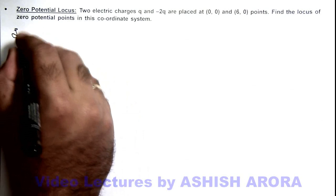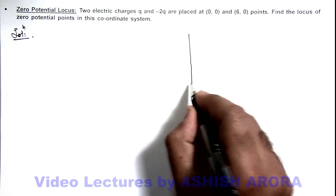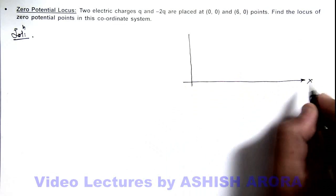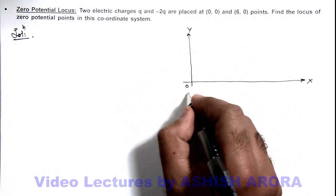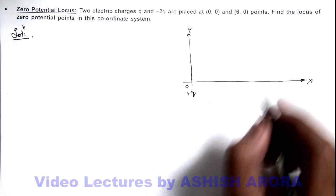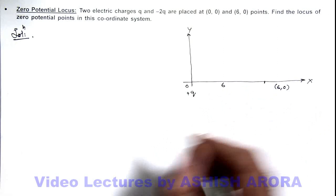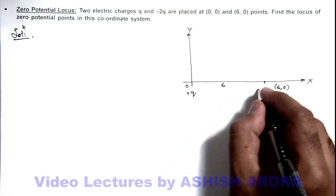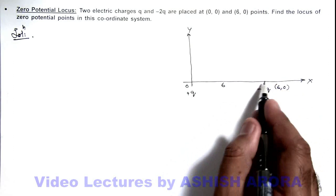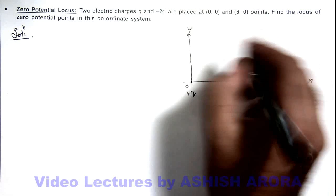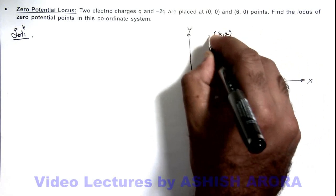First we can draw the situation. In this coordinate system, this is our origin where charge plus q is placed. There is another point at (6,0), a distance of 6 units from the origin, where minus 2q charge is placed. Due to these 2 charges, we consider a general point (x, y) and denote this point as P.